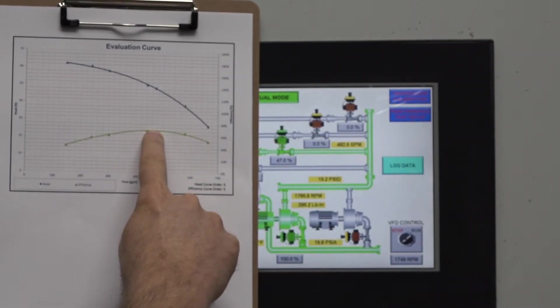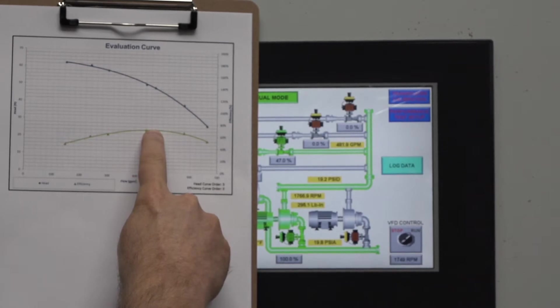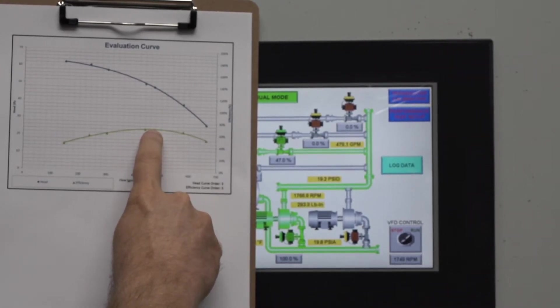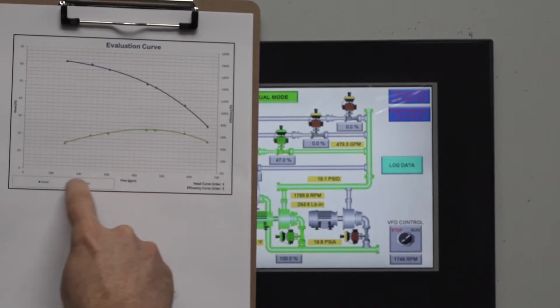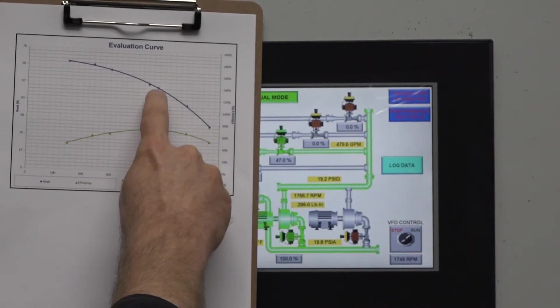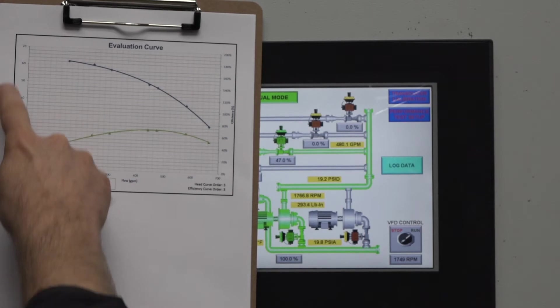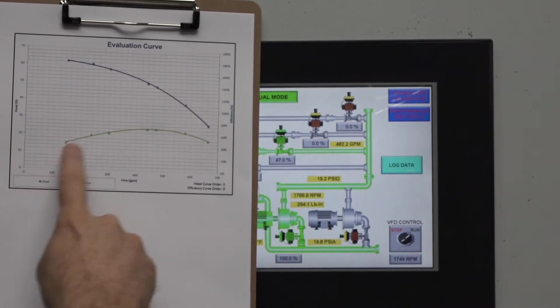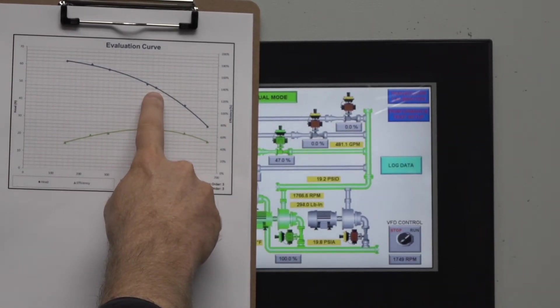This is typically towards the middle or sometimes a little bit to the right of a performance curve. This point defines the flow on this axis and the head on the vertical axis that the pump should be operating at to be most efficient.